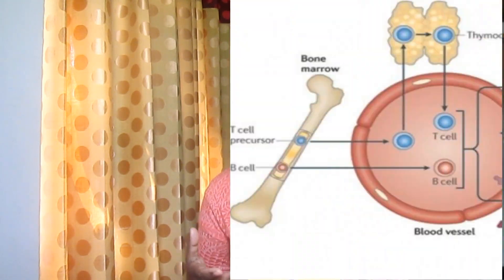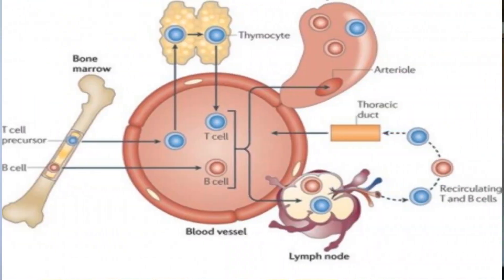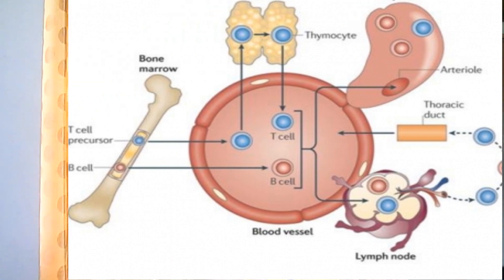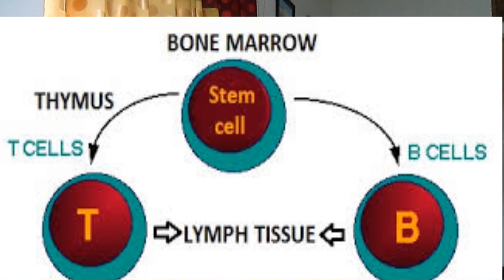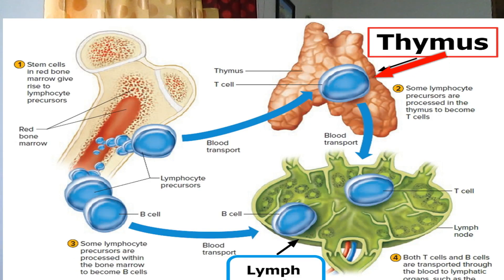There are two types of lymphocytes, both of which are produced before birth in bone marrow. B lymphocytes, that means B cells, remain in the bone marrow until they are mature and then spread throughout the body, concentrating in lymph nodes and spleen.